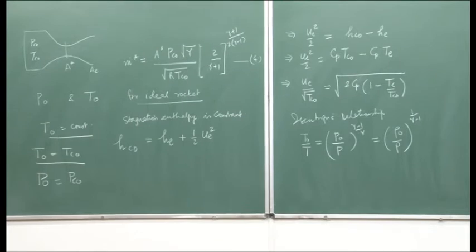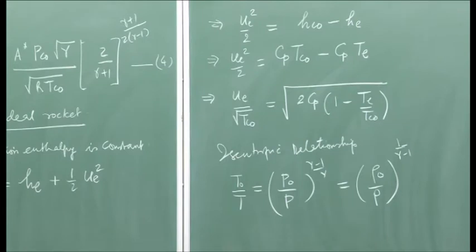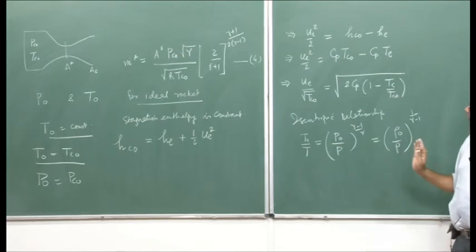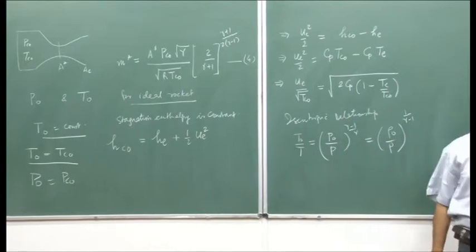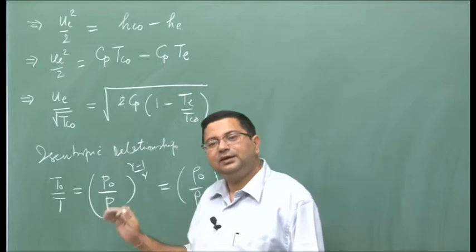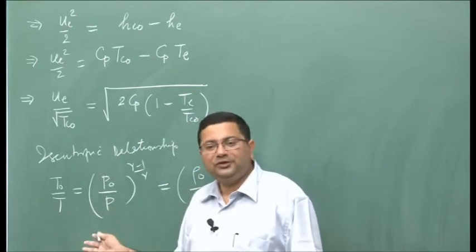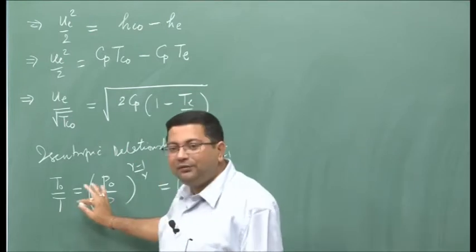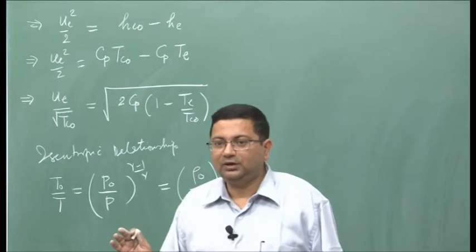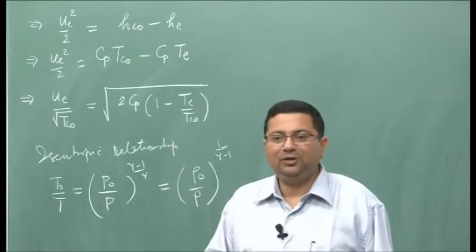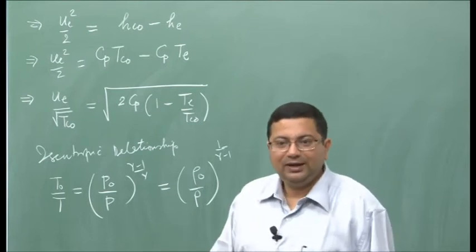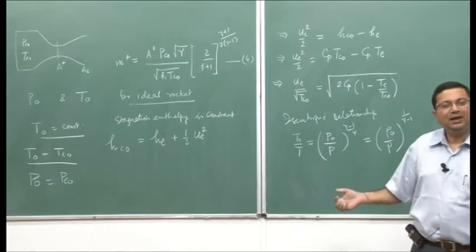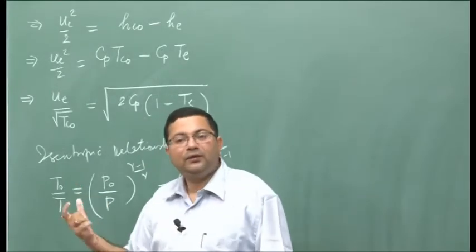Notice that since we assumed isentropic flow, we have a simple relationship relating pressure, temperature, and density. Without this assumption we cannot simplify the analysis. From thermodynamics, the process must be defined to get state properties, and with the isentropic assumption, we have that simple relationship. This is a very important assumption — it allows us to relate state properties in a straightforward way.